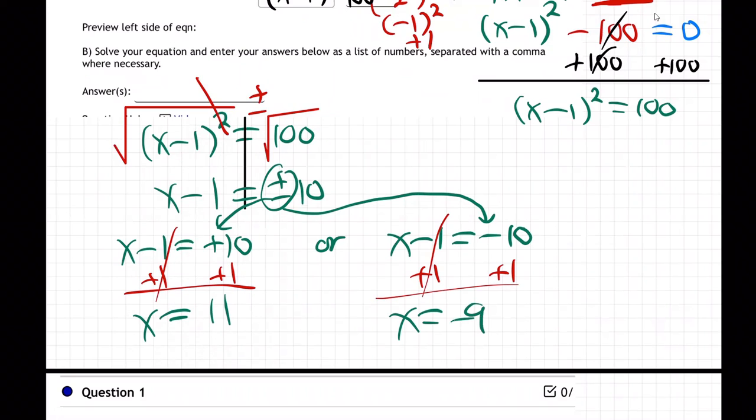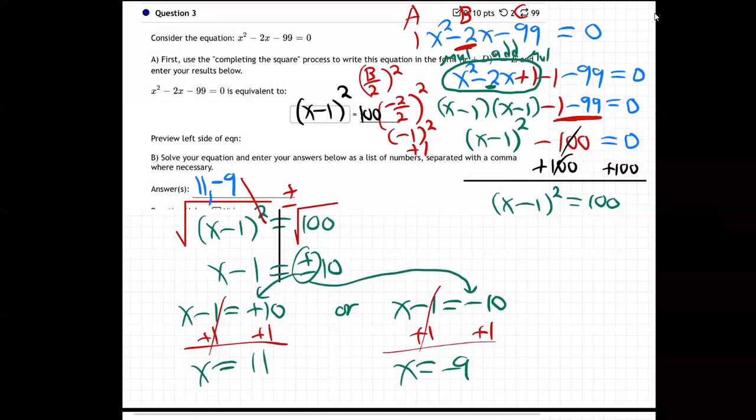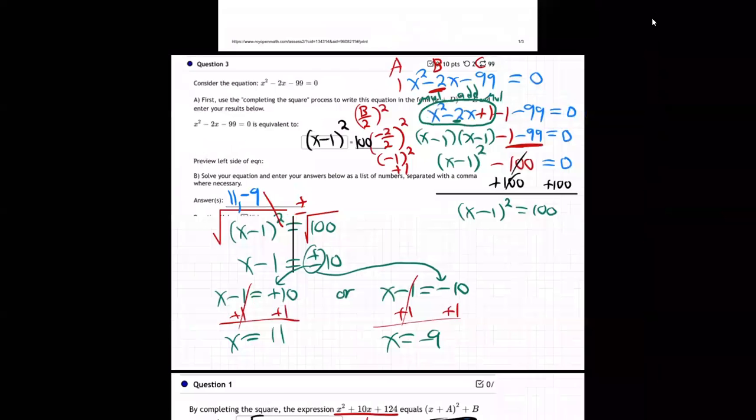So there's the two answers, 11 and minus 9. So that's what they want to write up here, 11 comma minus 9. You put the minus 9 first or 11, the order doesn't matter, just separate them with a comma. And so there we go.